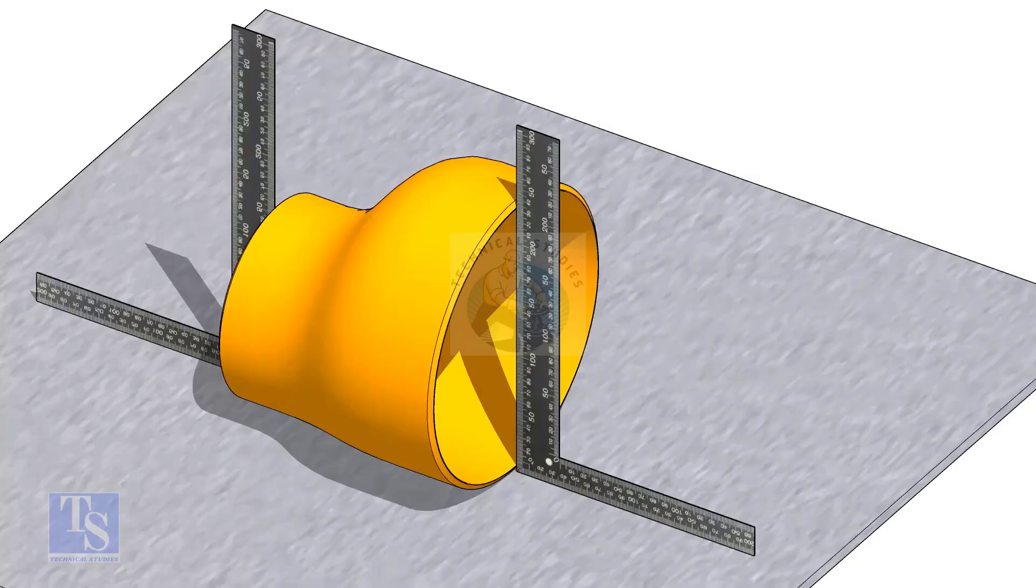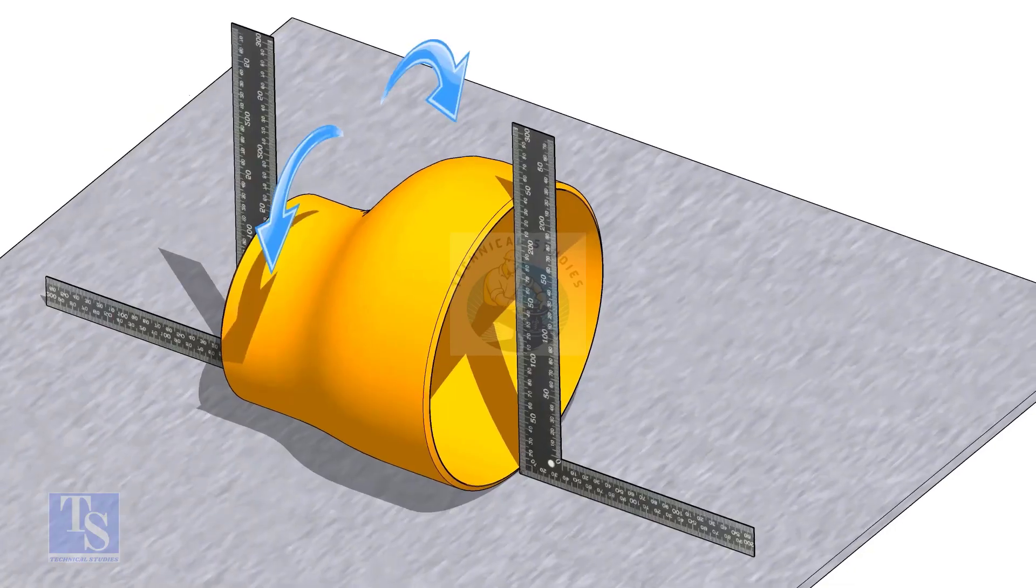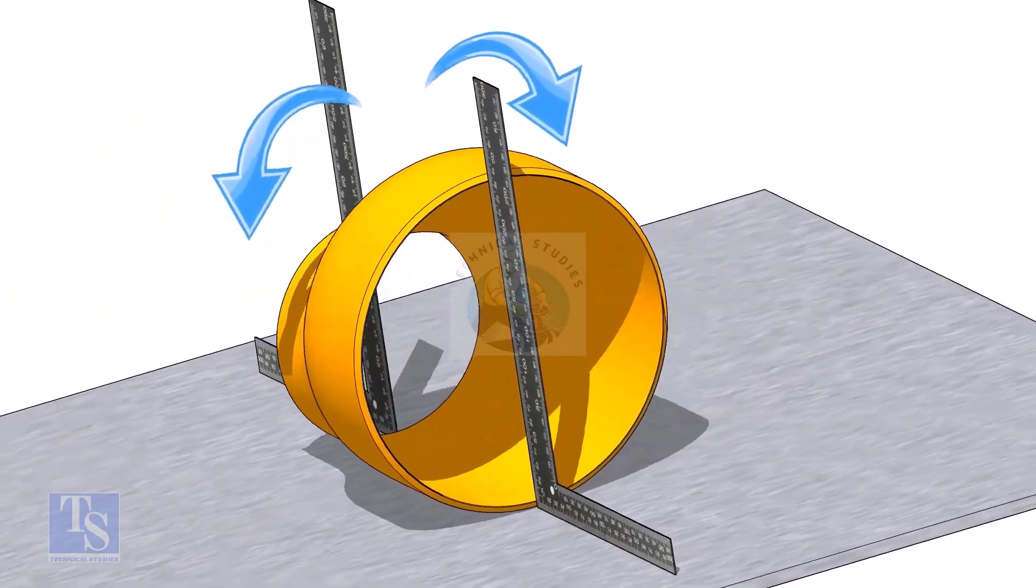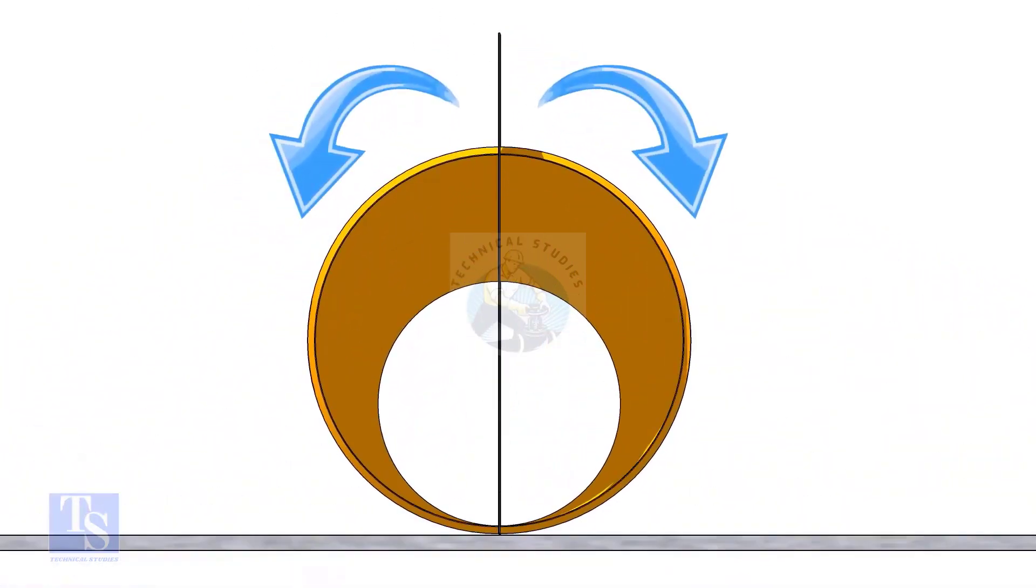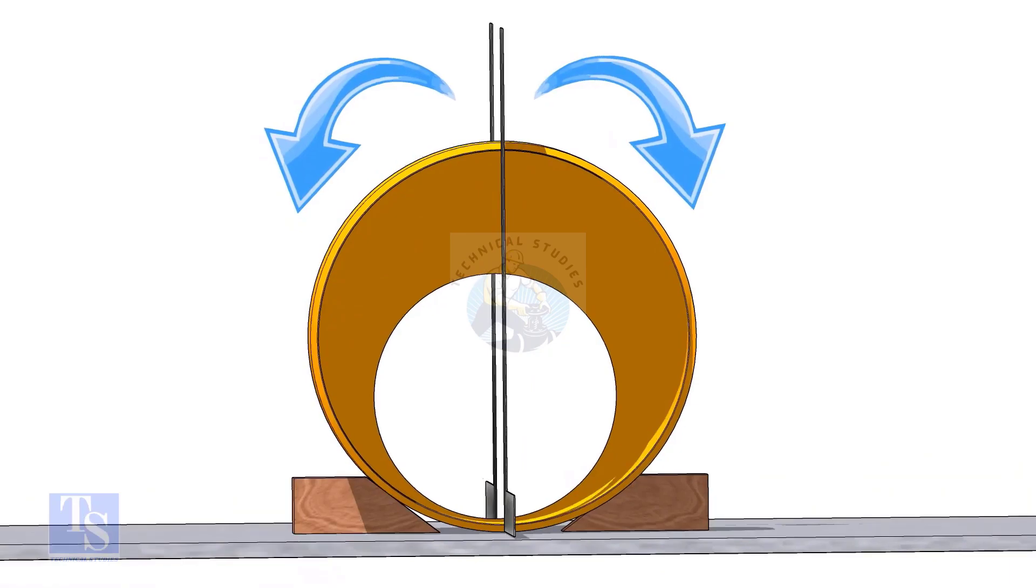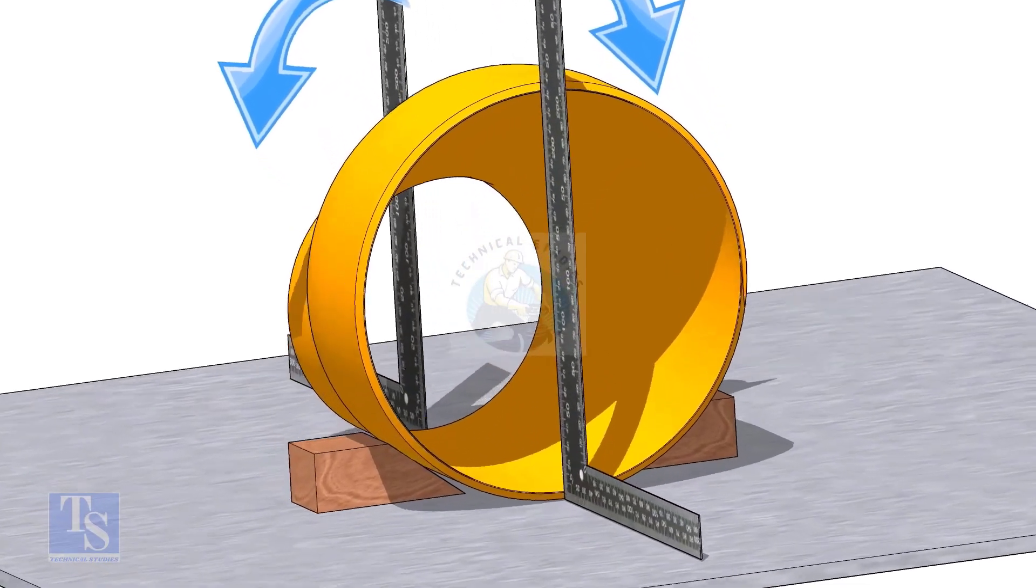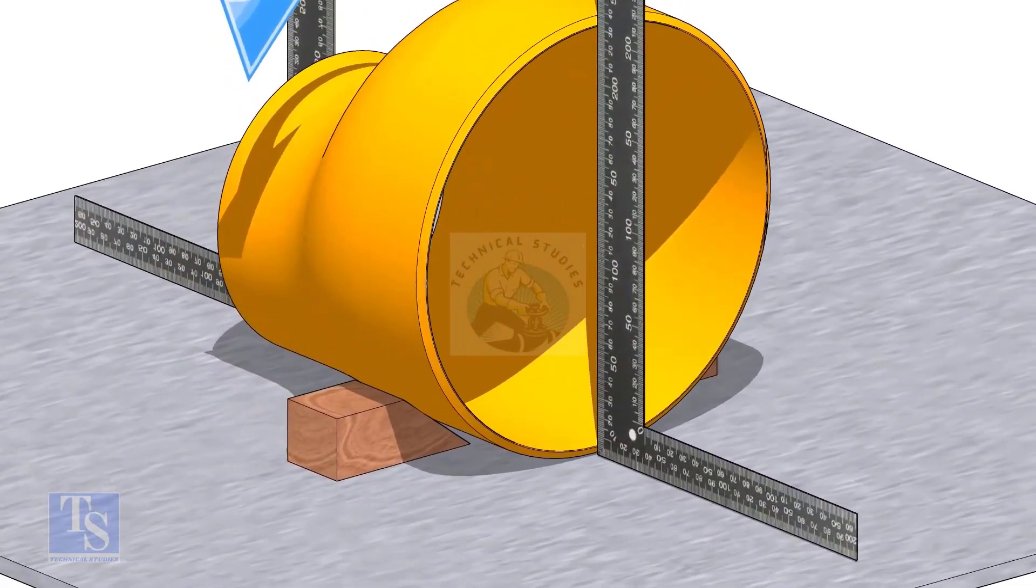Slowly rotate the reducer clockwise and anti-clockwise. You will see at some points the reducer touches the right angle at the top and at the bottom. This means that now the reducer sits on its straight side.